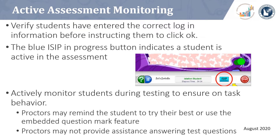During the assessment, it is important to actively monitor students. Once you verify students have logged in correctly, instruct them to click OK to begin the assessment. You will notice a blue ICIP icon appear on the bottom right-hand side of the screen, indicating the student is active in the assessment. While students are actively testing, walk around the room to ensure on-task behavior. Proctors can prompt or remind students to do their best but should not provide assistance to answer questions. If the green question mark is illuminated, students have the option to click on it and have the directions repeated, though this feature is not available for all subtests.